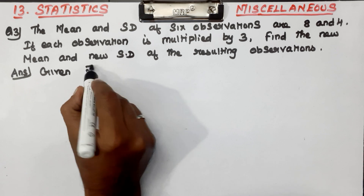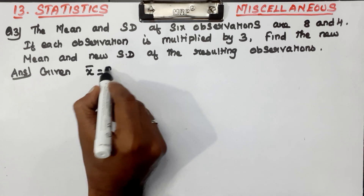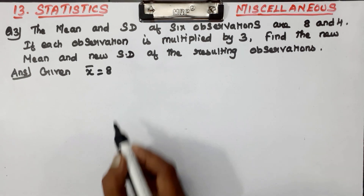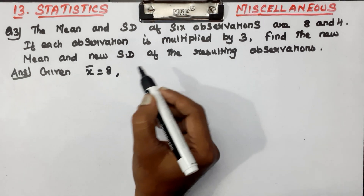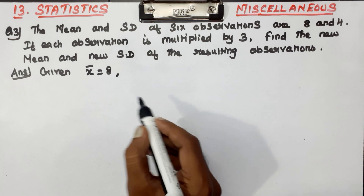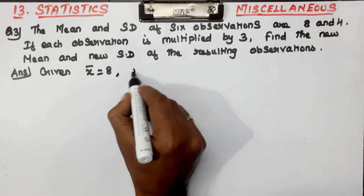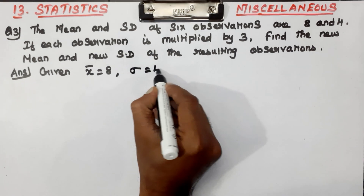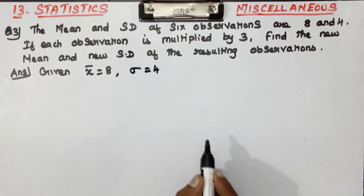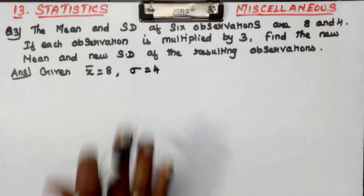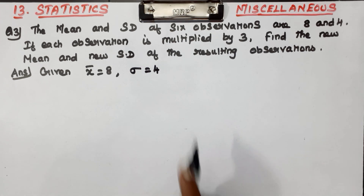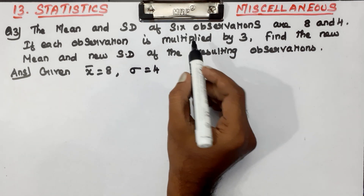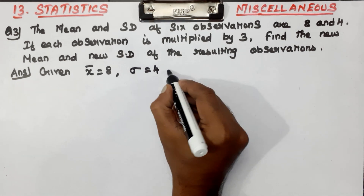The mean is x-bar. How is x-bar? The mean x-bar is equal to 8. The standard deviation sigma is equal to 4. And the number of observations is 6.